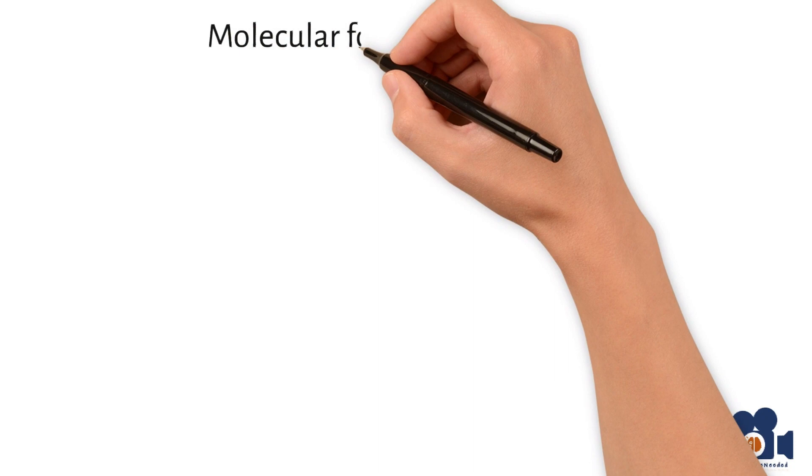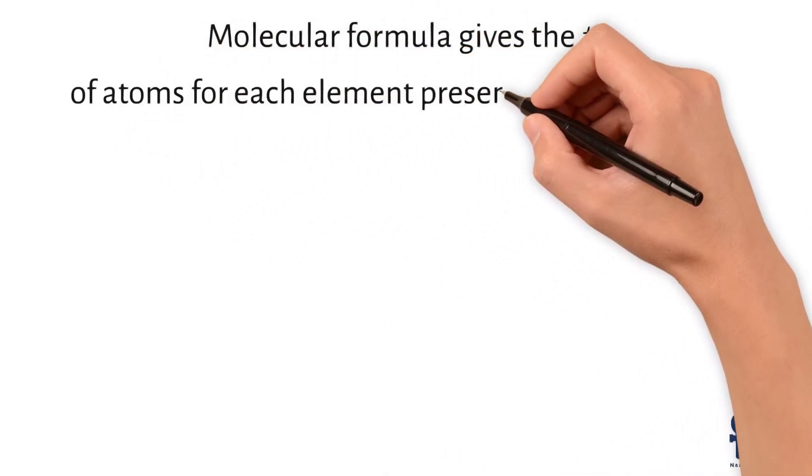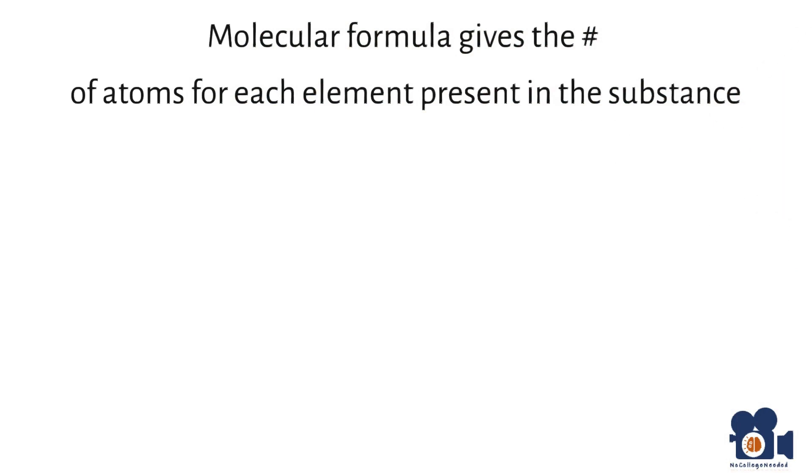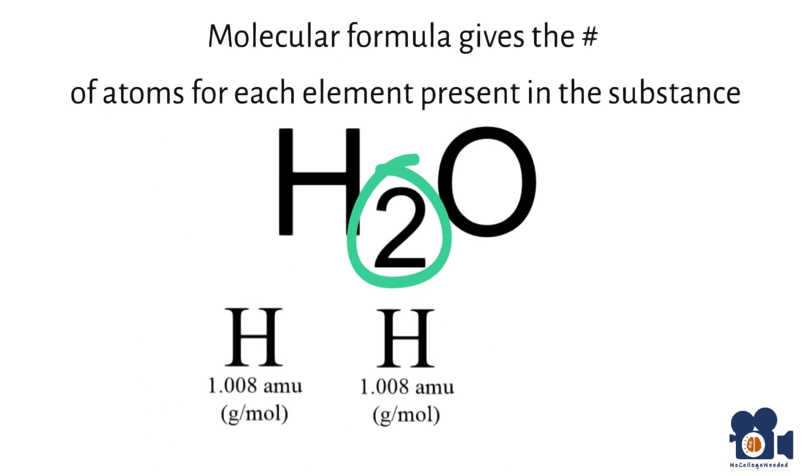As discussed in Unit 2, the molecular formula of a substance provides information about the proportionate quantity of atoms for each element present in the substance. For example, in H2O, there are two hydrogen atoms to one oxygen atom, and as stated in the previous video, there are two moles of hydrogen to one mole of oxygen in one mole of water.